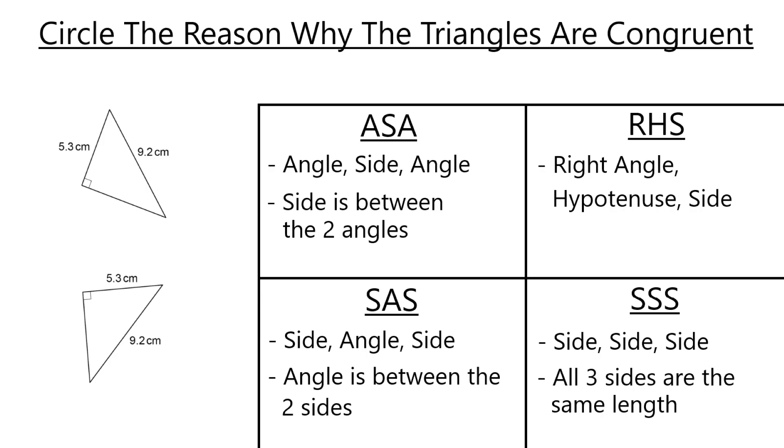We don't know two of the angles. We know one angle. We know the right angle. So I'm sure we could try and work them out, but that's not the point of the question. So we don't have that information given to us. So ASA is not going to be correct.